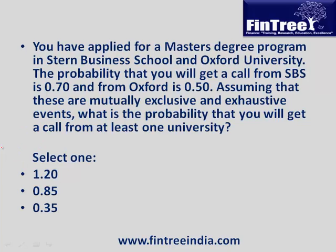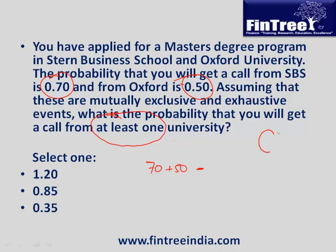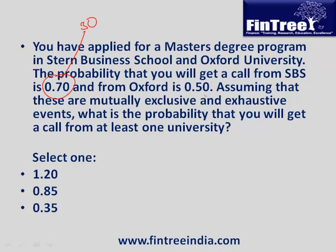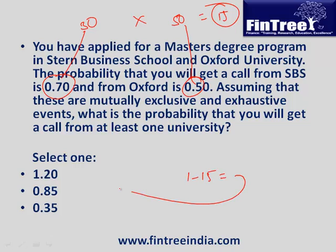You have applied for a master's degree at Stern Business School and Oxford. Probability of getting a call from SBS is 0.7 and from Oxford is 0.50. Assuming these are independent events, what is the probability of getting a call from at least one university? We compute 70 + 50 minus the common area of 35, giving 120 − 35 = 85%. Alternatively, probability of not getting admission from SBS is 30%, not from Oxford is 50%, not from both is 15%, so at least one is 85%.